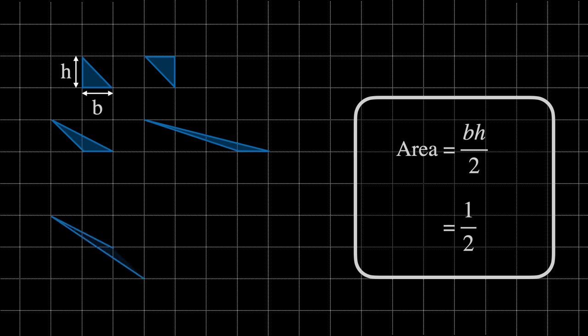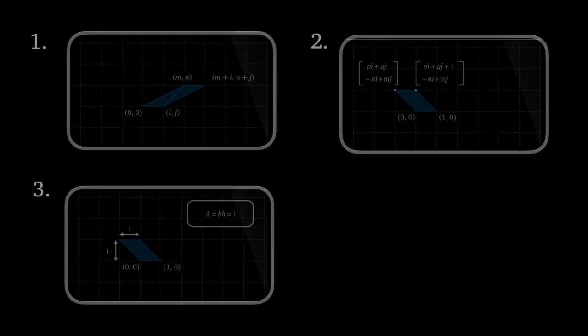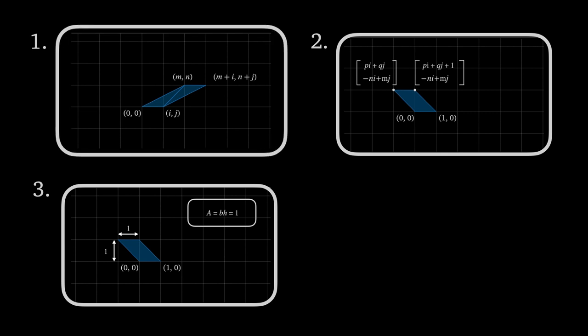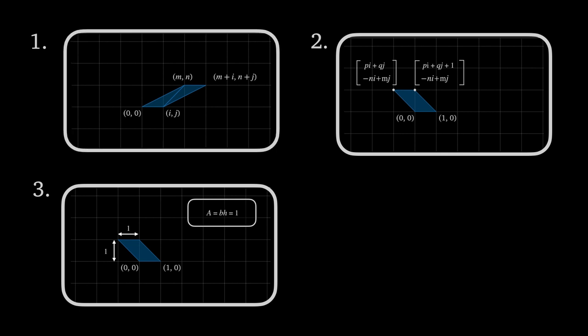In some cases however it's not really that obvious what the area will be and so a general proof is needed. We'll break down the proof into three stages. First, rather than considering triangles, it's easier to double the triangle to form a parallelogram and prove that all primitive parallelograms have an area of one.